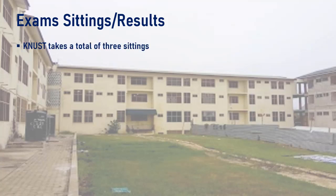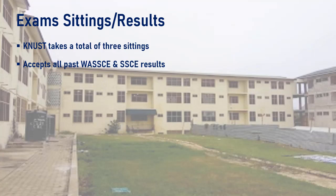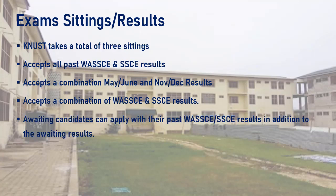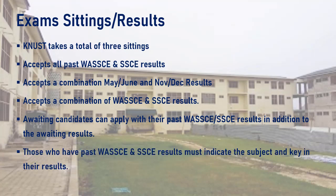The Kwame Nkrumah University of Science and Technology accepts a total of three exam settings. The university also accepts all past WASSCE and SSCE results, including a combination of May/June and November/December results, as well as a combination of WASSCE and SSCE results. Awaiting candidates can apply with their past results in addition to their awaiting results. Those who have past results must indicate the subjects and key in their grades when applying online.